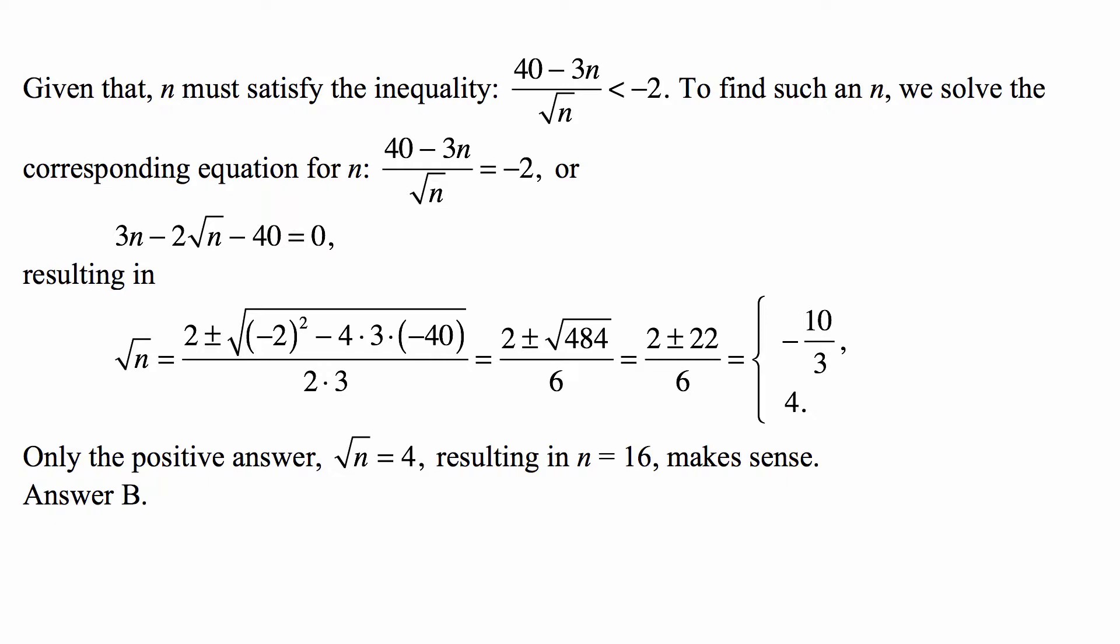This is (2 ± √484) / 6. That's the same as (2 ± 22) / 6, so it's either -10/3 or 4.